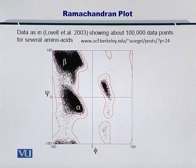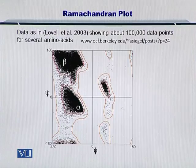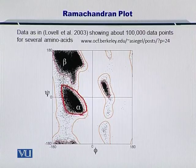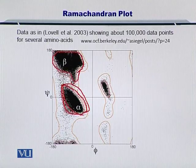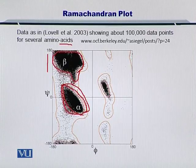In a very interesting study published by Lowell et al. in 2003, they examined the Psi and Phi angles for about 100,000 different data points across several amino acids in various proteins. They found that alpha helices only contain a specific range of Psi and Phi angles, while beta sheets only contain Psi and Phi values within a different range. This confirms that surveying many proteins always yields Psi and Phi angles from secondary structures that are limited to a selected range.